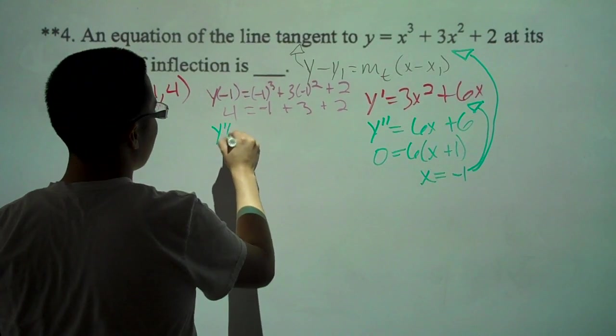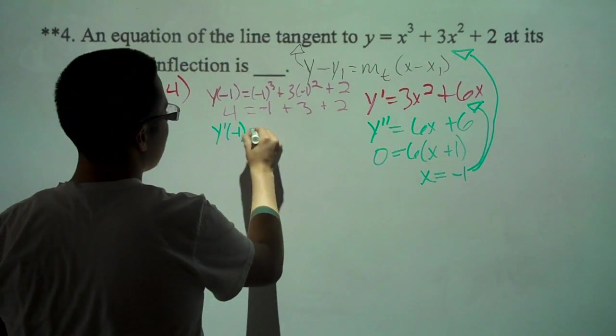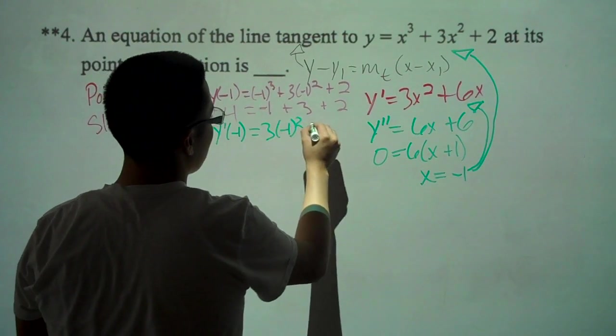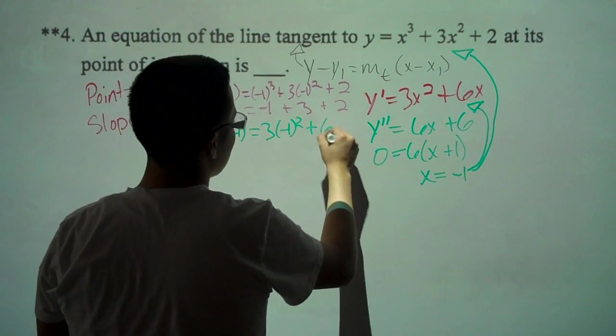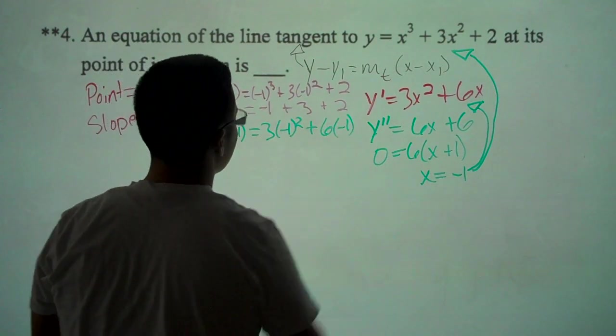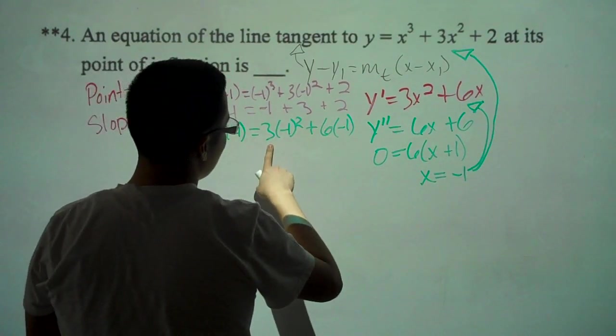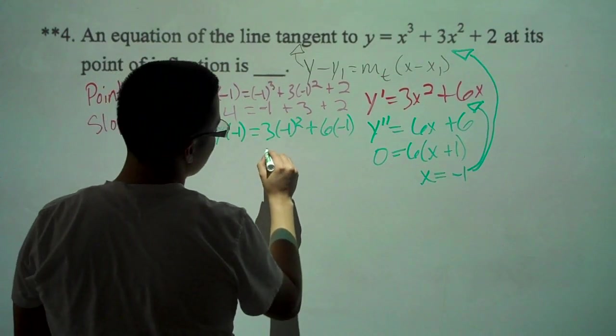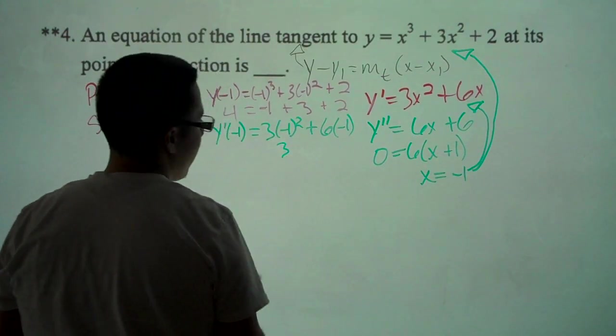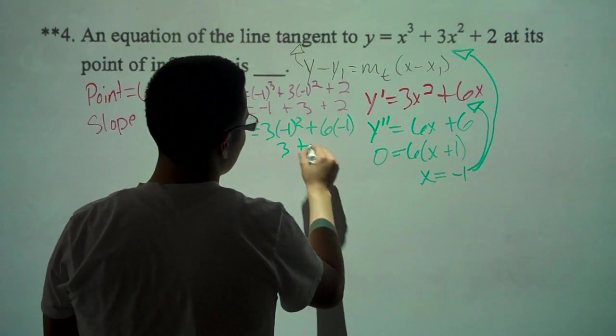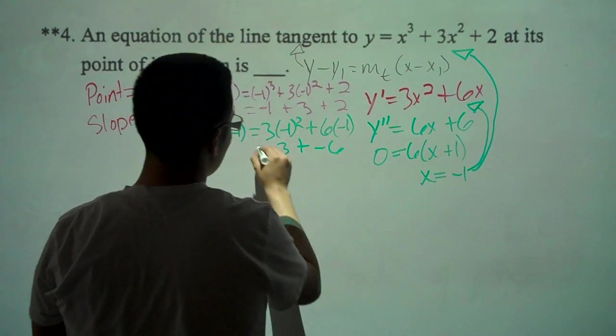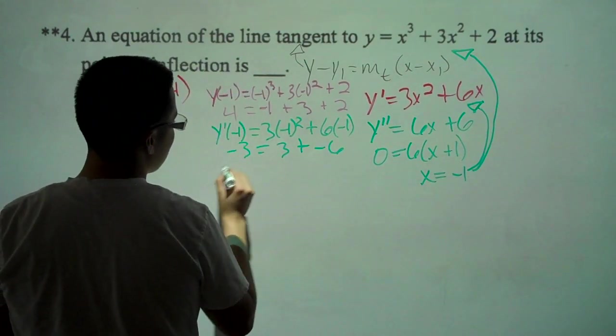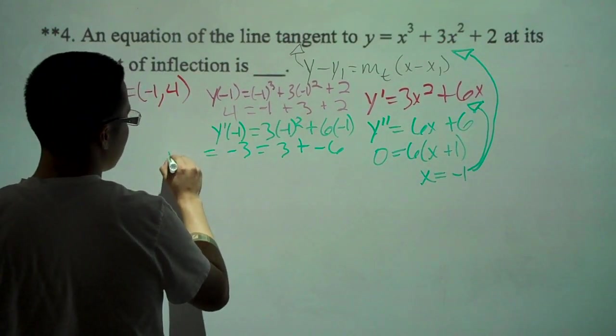y prime of negative 1 equals 3 times negative 1 squared plus 6 times negative 1. Negative 1 squared equals 3, plus negative 6 equals negative 3. This equals our m sub t, or slope.